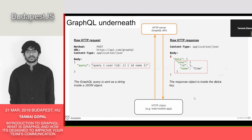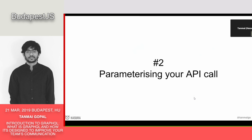The key thing to take away at this point is that the GraphQL query looks nice, but it's an independent string, and that brings its own set of problems. The first problem is when you try to parameterize the API call.